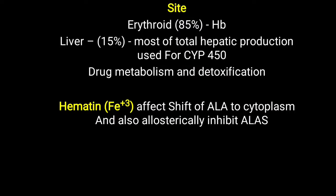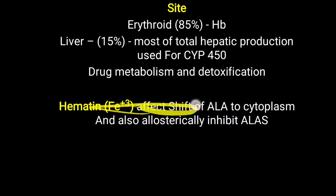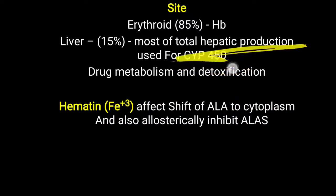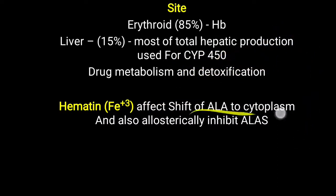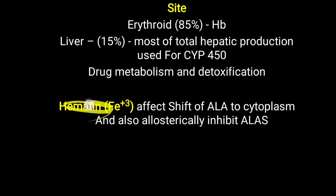How exactly is heme regulated? First, hematin is an important molecule formed when Fe²⁺ is converted to Fe³⁺ — ferrous to ferric form. Hematin affects the shifting of ALA from the mitochondria to the cytoplasm. Additionally, hematin will allosterically inhibit ALA synthase. So if hematin levels are increased inside the cell, overall ALA synthase enzyme activity will be inhibited.